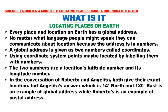Every place and location on Earth has a global address. No matter what language people might speak, they can communicate about location because the address is in numbers. A global address is given as two numbers called coordinates. Using a coordinate system, points may be located by labeling them with numbers. The two numbers are a location's latitude number and its longitude number. Angelita's answer — 14 degrees north and 120 degrees east — is an example of a global address, while Roberto's is an example of a postal address.